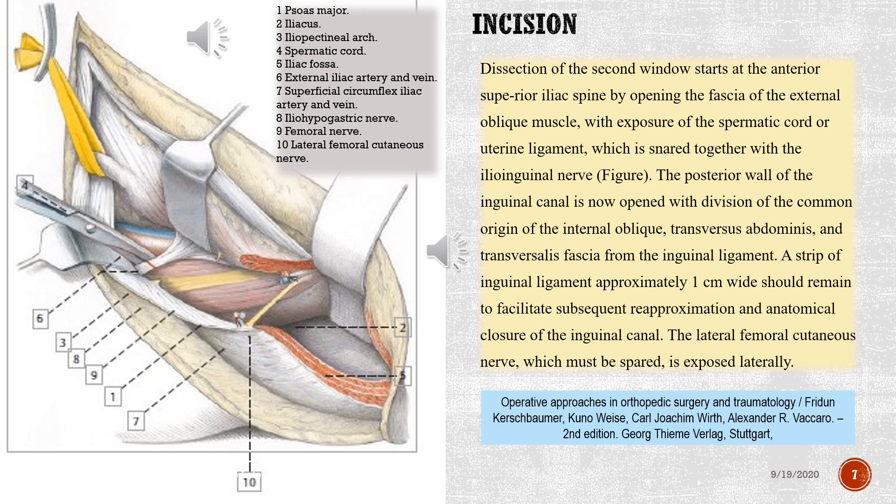Anatomical structures identified: 1. psoas major, 2. iliacus, 3. iliopectineal arch, 4. spermatic cord, 5. iliac fossa, 6. external iliac artery and vein, 7. superficial circumflex iliac artery and vein, 8. iliohypogastric nerve, 9. femoral nerve, 10. lateral femoral cutaneous nerve.